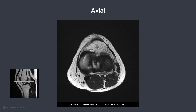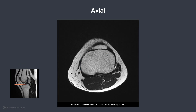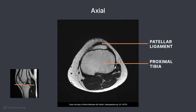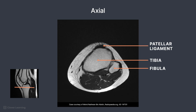The dark appearance centrally on this image indicates a slice cutting through the menisci. The medial head and lateral head of the gastrocnemius muscle are located posteriorly. Continuing inferiorly, the proximal tibia is demonstrated, along with the patellar ligament again seen anteriorly. On this last slice, the tibia and fibula are visible, with the patellar ligament attaching to the tibial tuberosity.